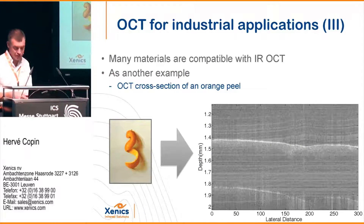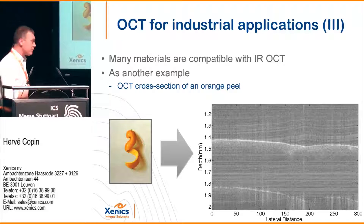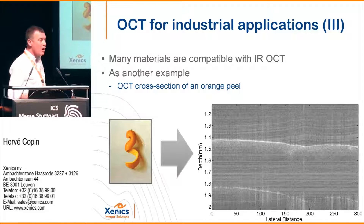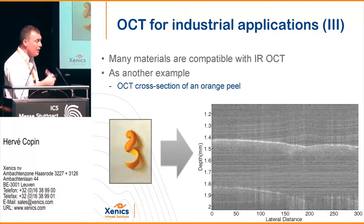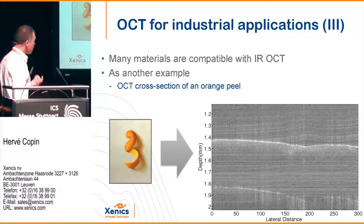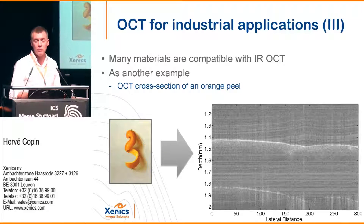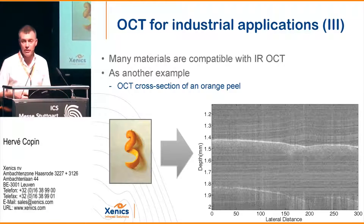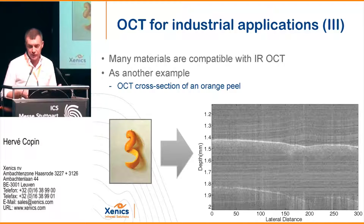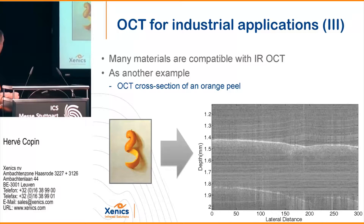Just for interest, OCT can also be applied to many other materials — for example, an orange peel. There is still a lot of research to be done on applicable materials, but this technology is really booming in the industry.